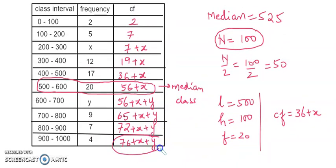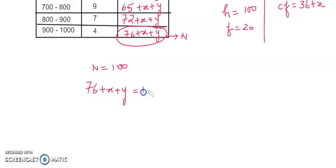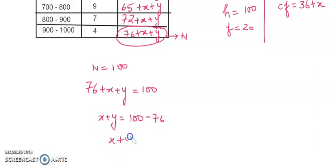The last entry of the CF table is n. So n is given as 100 and from the CF table n equals 76 plus x plus y equals 100. Therefore, x plus y equals 100 minus 76, so x plus y equals 24. That is the first equation.